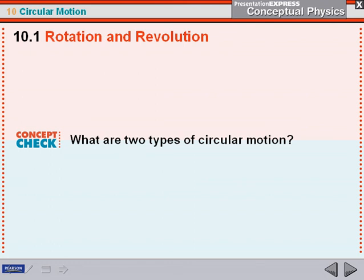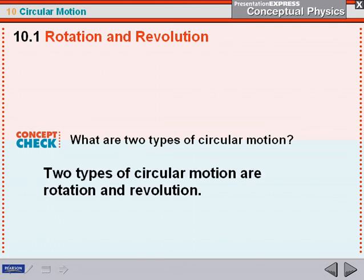So what are the two types of circular motion? The two types of circular motion are rotation and revolution.